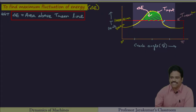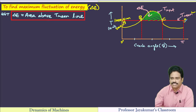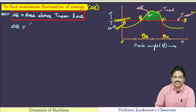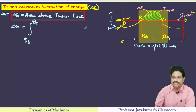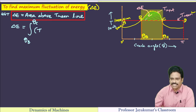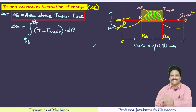The shaded area above the T_mean line is equal to the maximum fluctuation of energy, as discussed in theory. Delta E equals the integral from angle θ_b to θ_c of (T minus T_mean) dθ. If I use the full torque equation in the integral, I get the whole area under the curve, so I subtract T_mean. This shaded area represents delta E. Before proceeding, I need to determine the values of θ_b and θ_c.